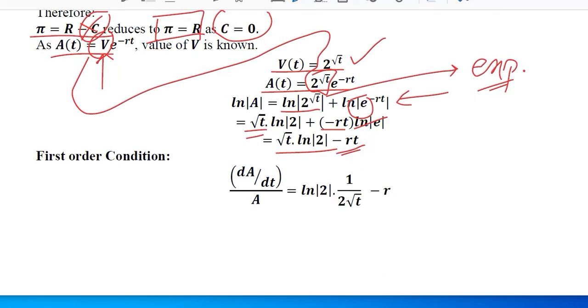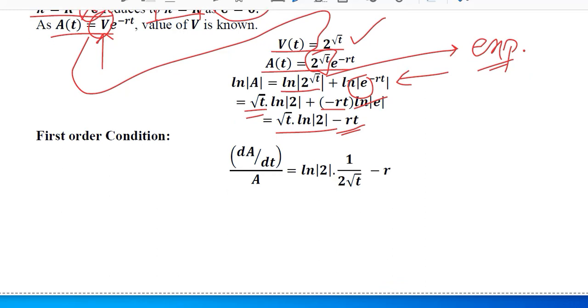Now we know that the first order condition needs to be applied in order to come to the maximization point. This is the derivative of the left-hand side, which was natural log of A - that is, the log of A and the value of A itself.